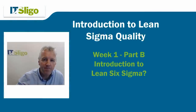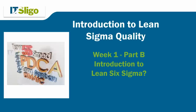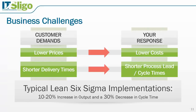Welcome to part B of the week one lecture. We're now going to look at an introduction to Lean Six Sigma. For many of you, the business challenges really haven't changed — if anything, they're getting more intense. Customers' demands are increasing: customers want lower prices, your response has to be lower costs; customers want shorter delivery times, your response has to be shorter process lead times. Typical Lean Six Sigma implementations have shown a 10–20% increase in throughput and a 30% decrease in cycle time, replicated across many industries in both manufacturing and service sectors.